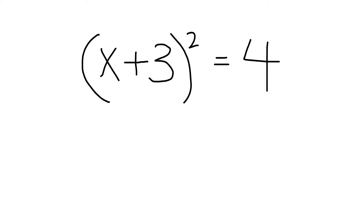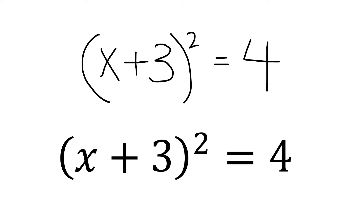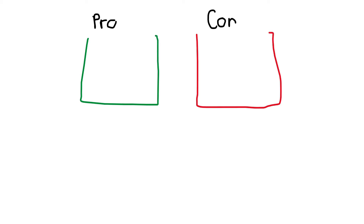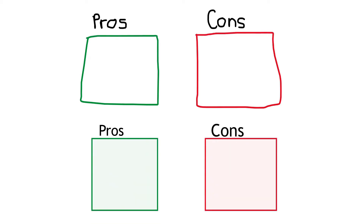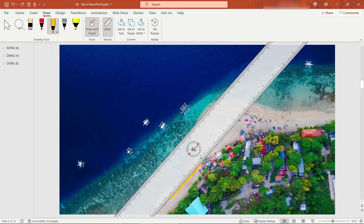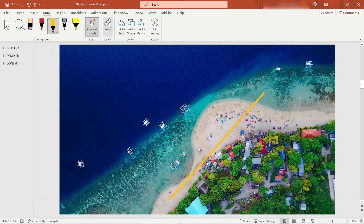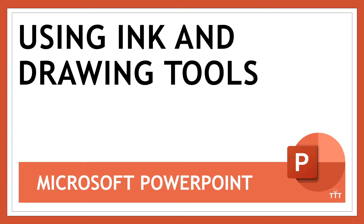Did you know that in PowerPoint you can handwrite a math equation and have it converted into text and symbols that you can edit? Or convert hand-drawn shapes into shapes and text that you can manipulate in your slides. Or even use a ruler with your lines to make sure they're perfectly straight. Whether you have a touchscreen, a digital pen, or even just your mouse, you can do all of this and more in PowerPoint.